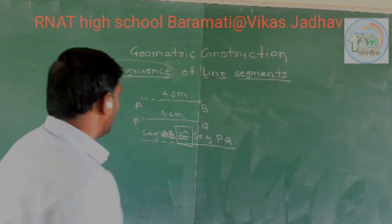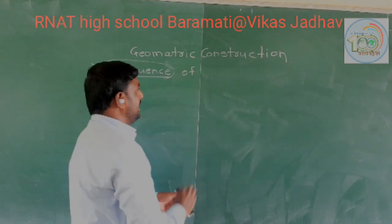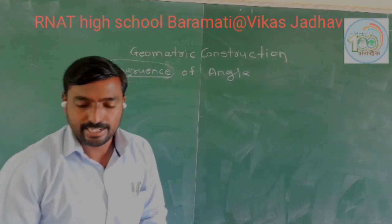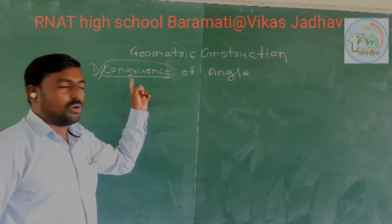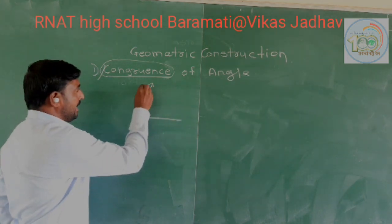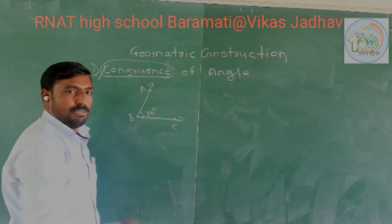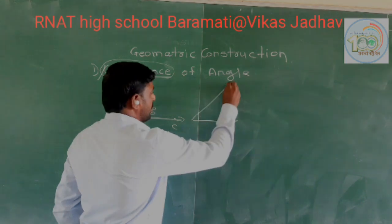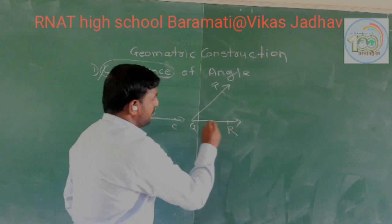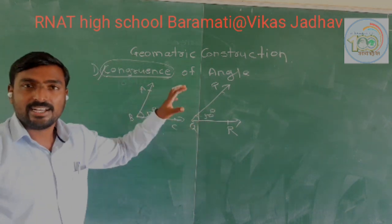Another is the congruence of angles. How do you measure any angle? We measure any angle in degrees. Suppose here I draw angle ABC, and this is 50 degrees. And another angle, suppose angle PQR, is also 50 degrees. It means these 2 angles have equal measure.